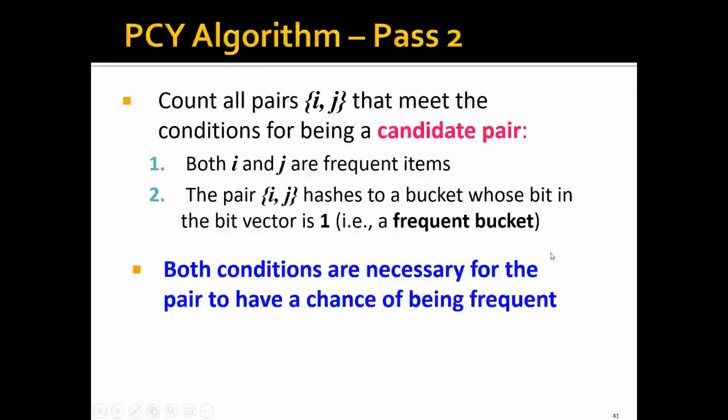In the second pass, we only count pairs that meet the conditions for being a candidate pair. We have two conditions: first, as in the A-Priori algorithm, both i and j are frequent items. Second, the pair i,j needs to hash to a bucket whose bit in the bit vector is 1—it must be a frequent bucket. Both conditions are necessary for the pair to have a chance of being frequent.